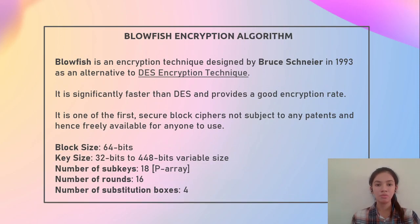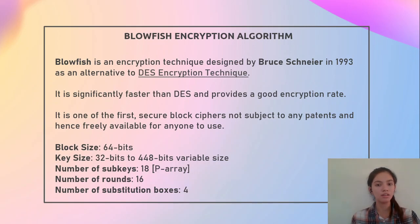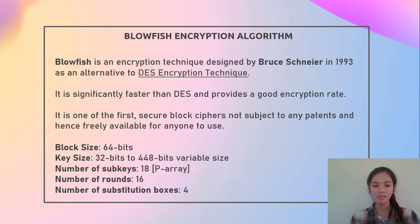Let's go into the Blowfish encryption algorithm in detail. Blowfish is an encryption technique designed by Bruce Schneier in 1993 as an alternative to DES. It is significantly faster than DES and provides a very good encryption rate. Blowfish is one of the first secure block ciphers and is not subject to any patents, so it is freely available for anyone to use. The block size is 64 bits, key size varies from 32 to 448 bits, the number of subkeys is 80 stored in the P array, there are 16 rounds, and 4 substitution boxes.